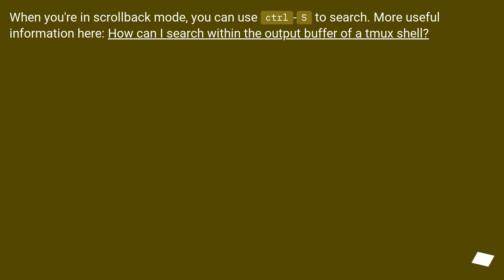When you're in scrollback mode, you can use ctrl s to search. More useful information here: how can I search within the output buffer of a tmux shell?